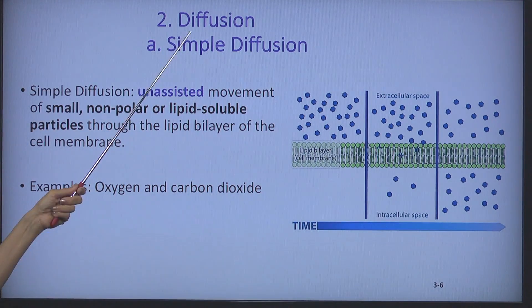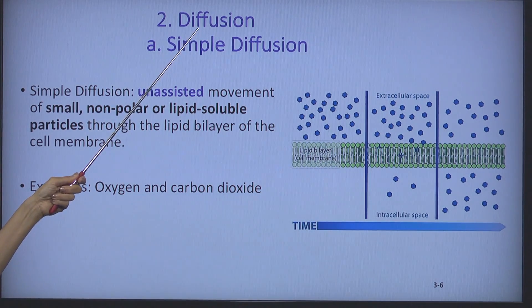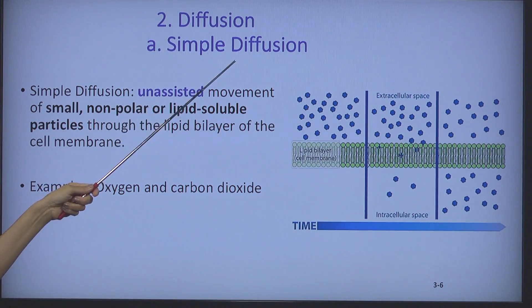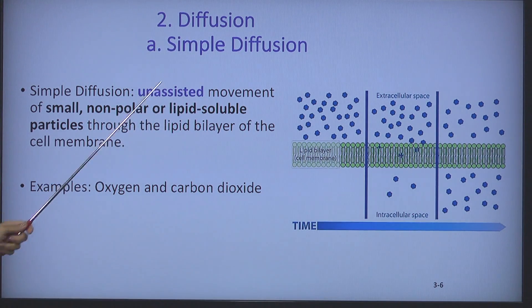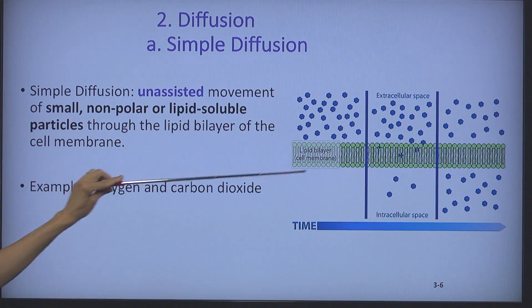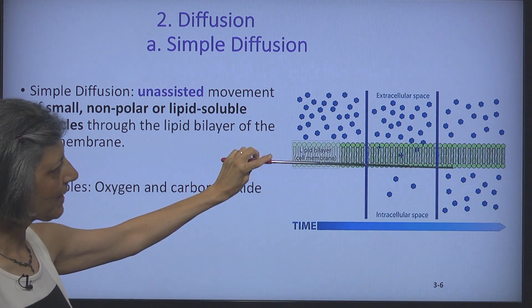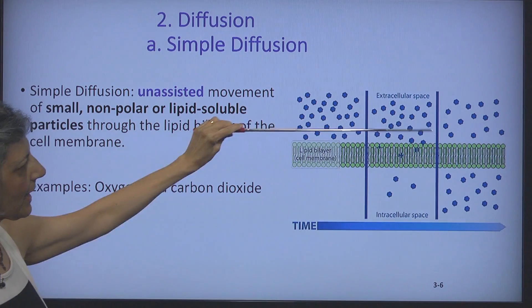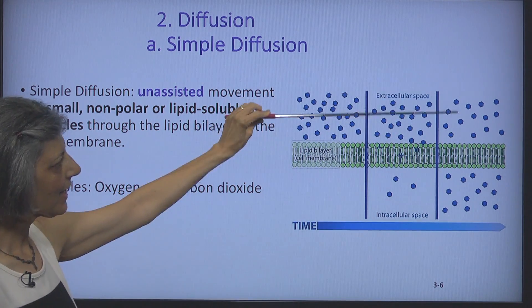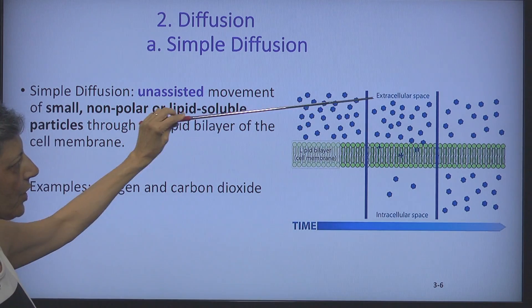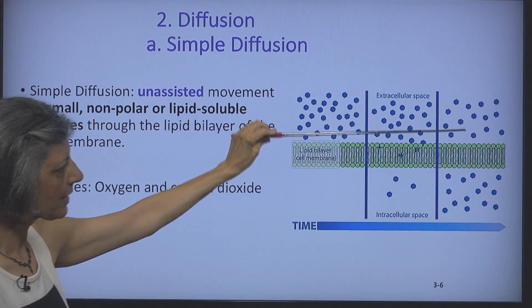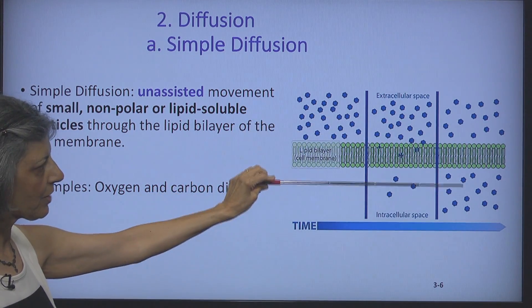The second mechanism is diffusion, and we have two types: simple diffusion and facilitated diffusion. In simple diffusion, no assistance is needed. Looking at the cell membrane — a bilayer of lipids — if there is a higher concentration of solutes outside the cell, they will simply diffuse from an area of higher concentration to an area of lower concentration inside.